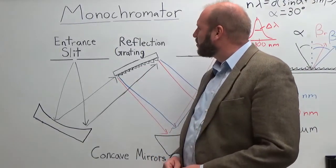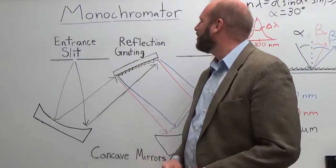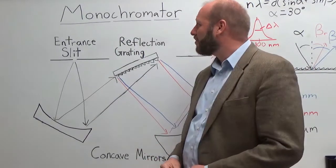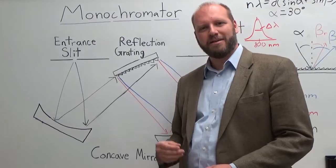Now, the word monochromator comes from the Greek mono meaning one, chroma meaning color, and ader meaning something that does a thing. So a monochromator's job is to separate light into one color.